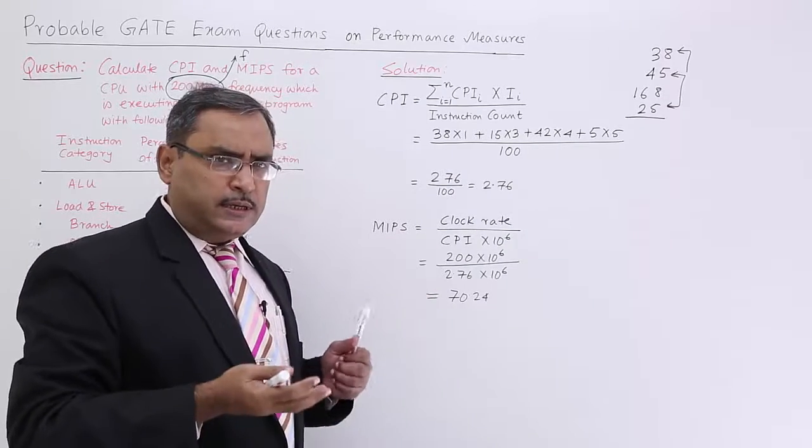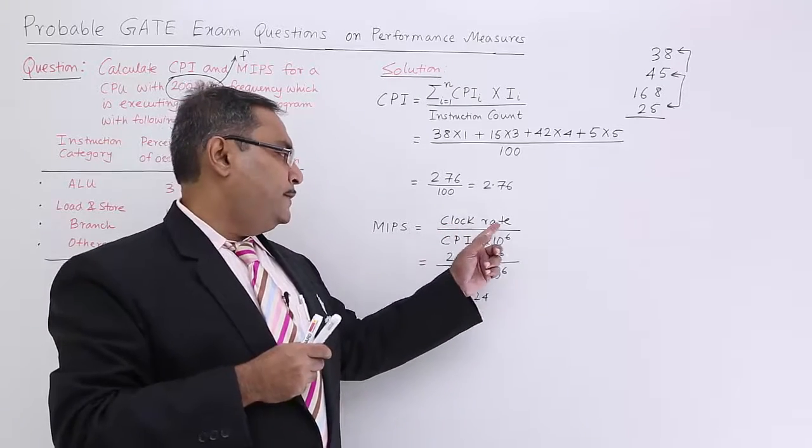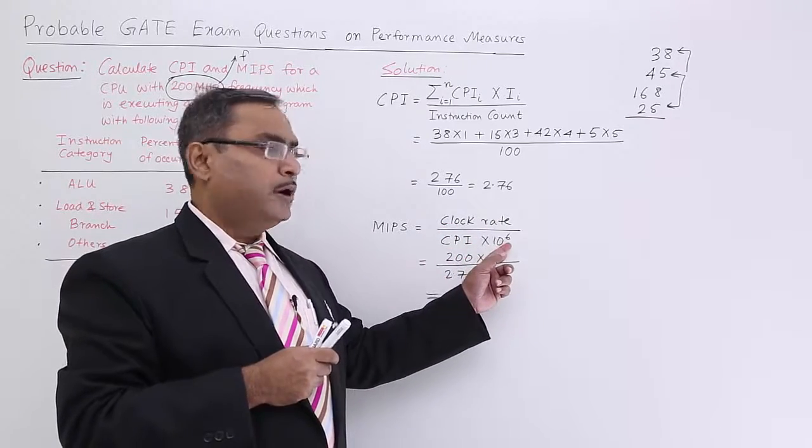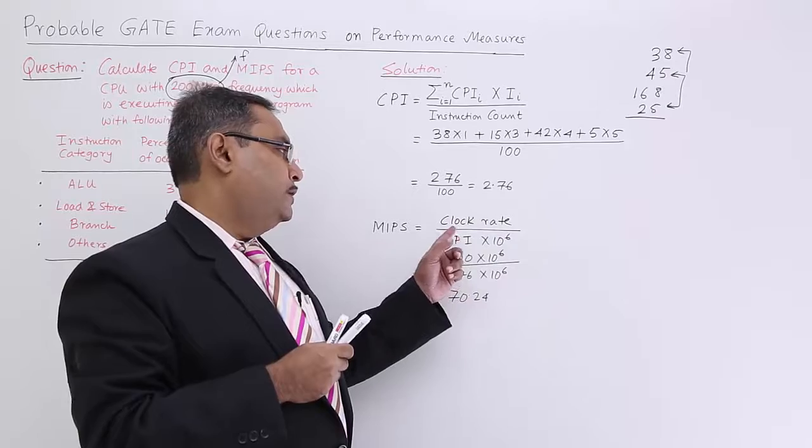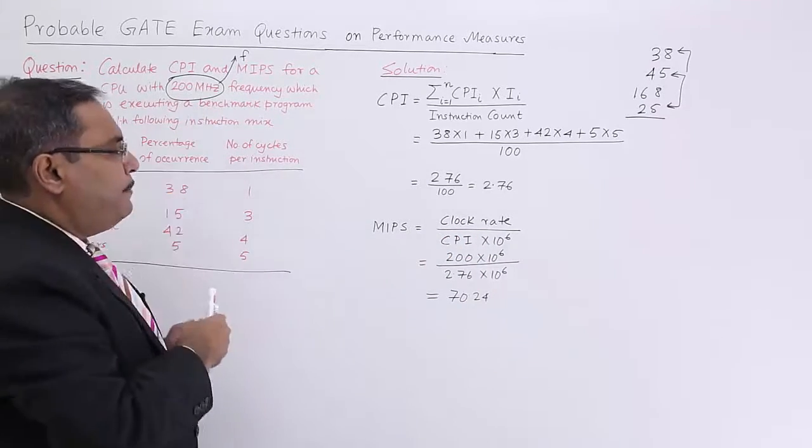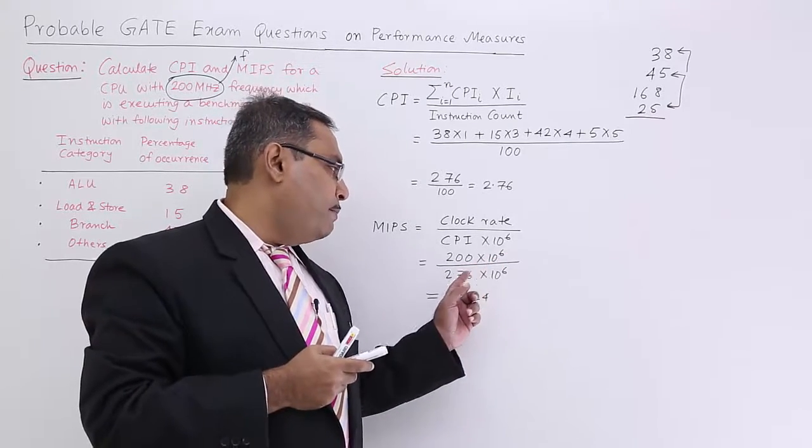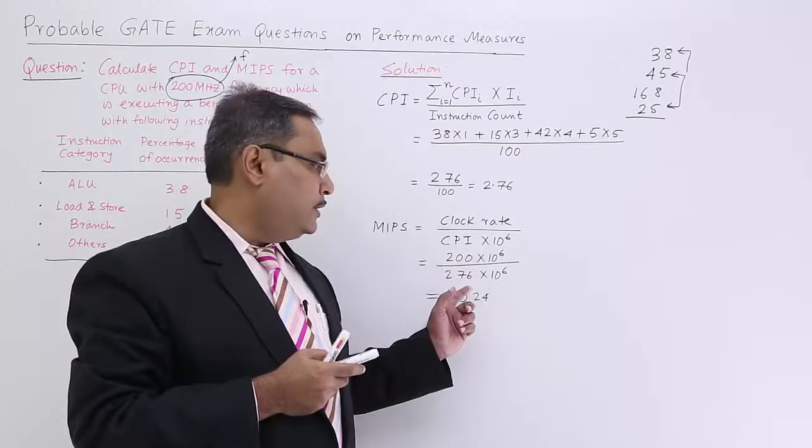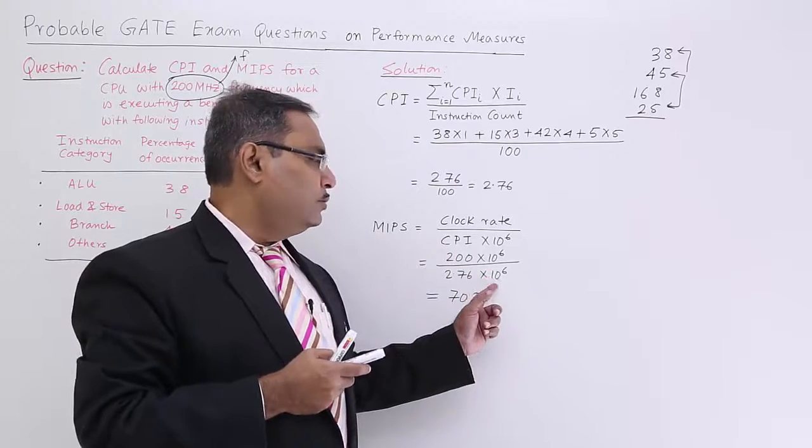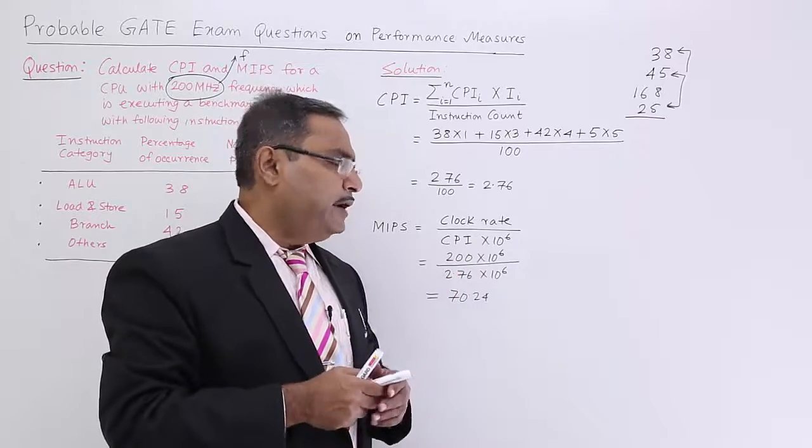Now MIPS. What is the formula for MIPS? Please watch the prior videos: clock rate by CPI into 10 to the power of 6. Clock rate is 200 megahertz, so 200 times 10 to the power 6, divided by CPI 2.76 times 10 to the power 6. If you calculate, it is 72.24.